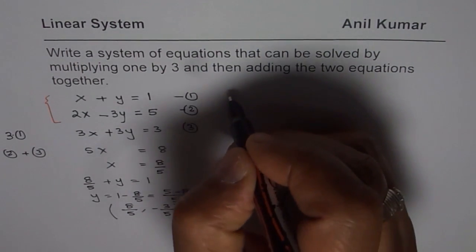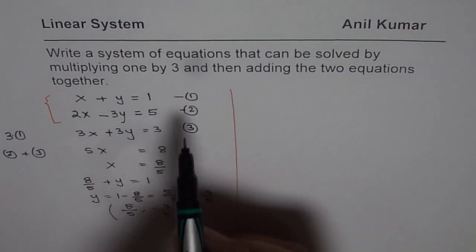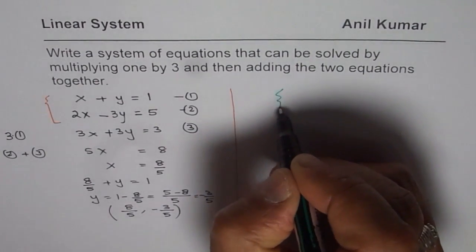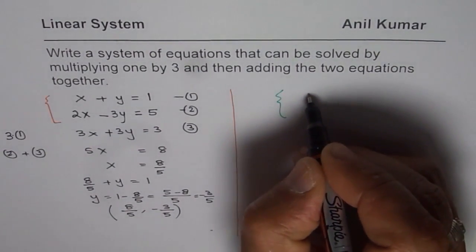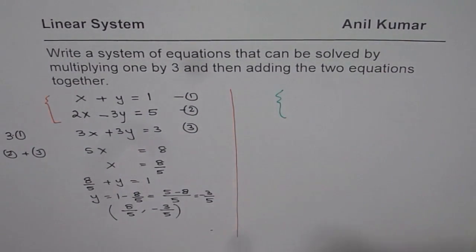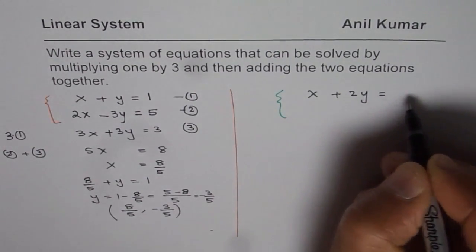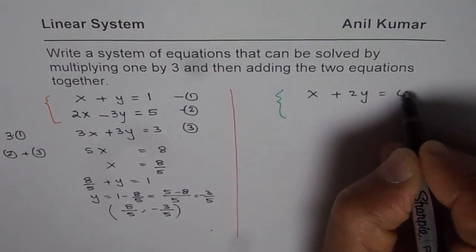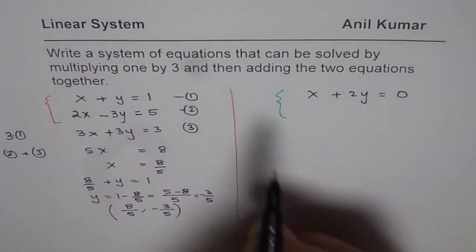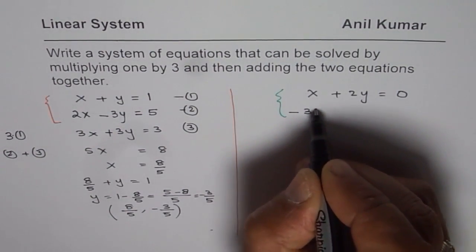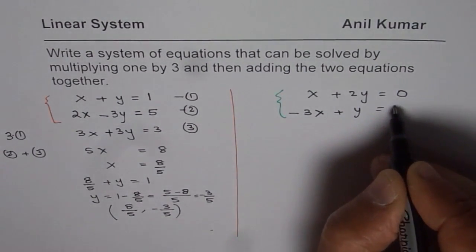Let us make another system. This is one example for you. If you have to do it, let us now this time take care of x. We can write, let us keep it simple, x plus 2y equals some number, it could be 0 also. Now we need to multiply and add, that means negative 3x plus, let us say, y equals 4.